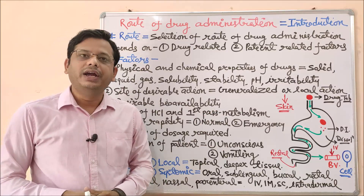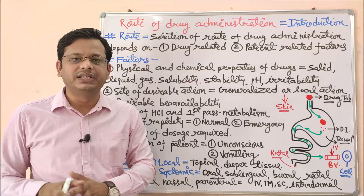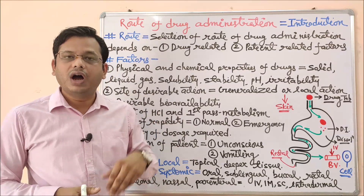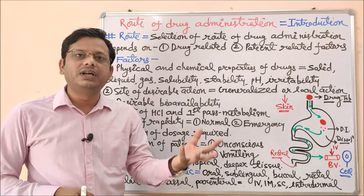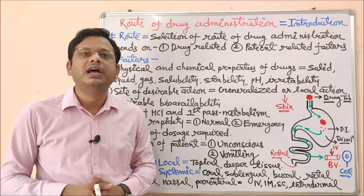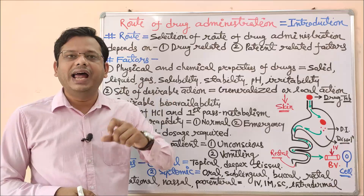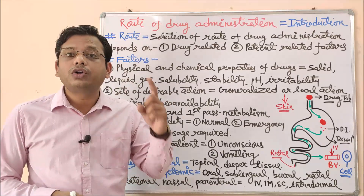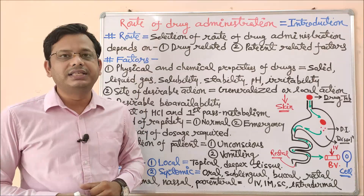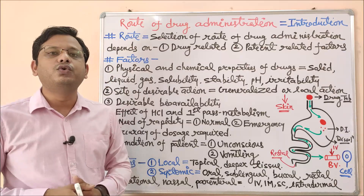pH is an important parameter as well. If the drug is acidic and the gastric content is acidic, specific interactions occur; similarly for a basic drug in an acidic environment. For example, an enteric-coated drug like ranitidine is coated so that it does not dissolve in the acidic medium of the stomach, allowing it to reach the intestine in a basic medium. These are very important factors to consider when selecting a proper route of drug administration.